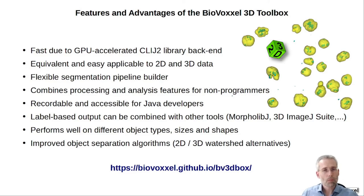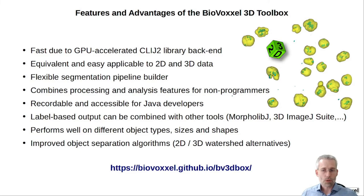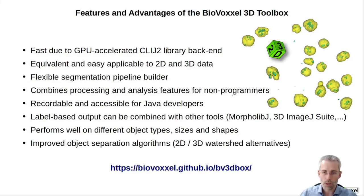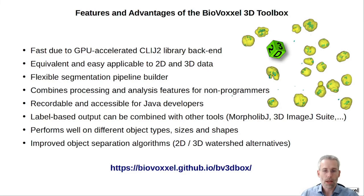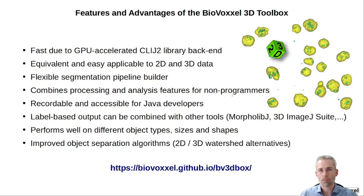Everything is on GitHub. The label-based output can be combined with other libraries from ImageJ. As you've seen, it performs well for different object sizes, shapes, and types, and the new separation methods might be good alternatives to already existing 2D watershed or seed-based methods. Information can be found on the GitHub page mentioned here, along with installation instructions, and if there are any questions I'm always available on the forum.